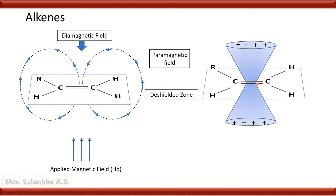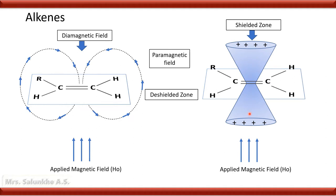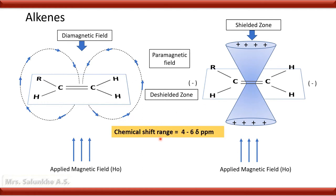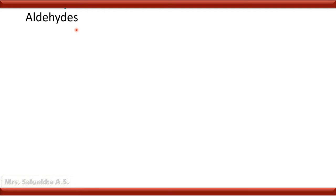In the cup and cone arrangement, when the alkene molecule is placed in an applied magnetic field, its plane is perpendicular to the applied magnetic field. The cone indicates a shielded zone above and below the carbon-carbon double bond, while outside the plane there is a deshielded zone. The positive sign indicates the shielded zone and the negative sign indicates the deshielded zone. The proton on the carbon-carbon double bond is present in the deshielded zone, so it shows a downfield effect. In case of alkenes, the chemical shift range is 4 to 6 delta ppm.